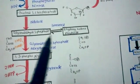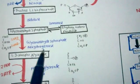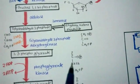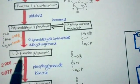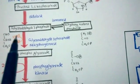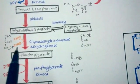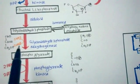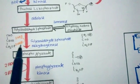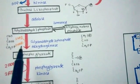From glyceraldehyde-3-phosphate, another very important enzyme — glyceraldehyde-3-phosphate dehydrogenase, popularly known as GAPDH — converts glyceraldehyde-3-phosphate into 1,3-bisphosphoglycerate. In this step, NAD⁺ is converted to NADH, which is very important because the NADH produced here will later be utilized in the electron transport chain to produce further ATP.